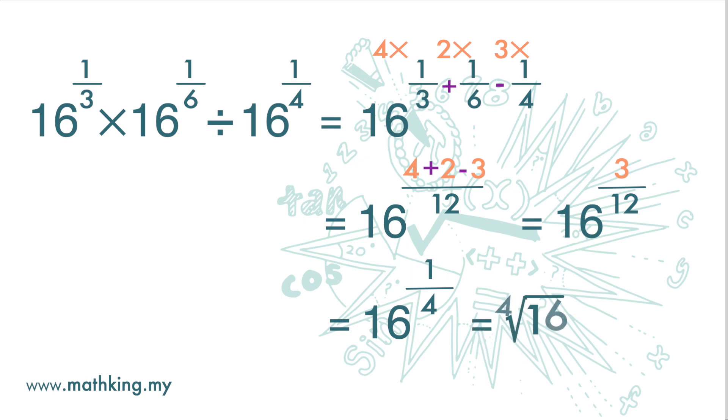Now, this is fourth root of 16. The number that multiplies itself 4 times to get 16 is 2, so the answer is 2.